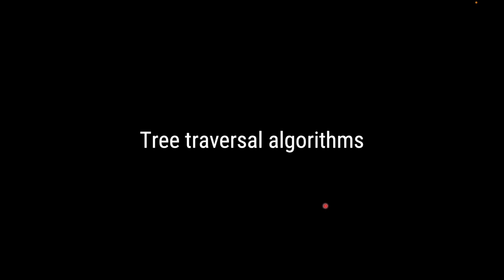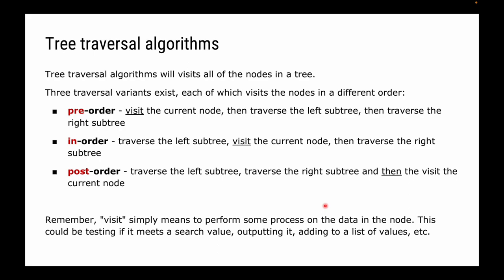We've talked about trees in their character, binary search trees, binary search algorithms applied to the tree, and tree implementations. The last thing we need to talk about is tree traversals. Remember, just as with graphs, searching isn't the same as traversing. Traversing means visiting every node in the tree. There are three different tree traversal variants, each visiting nodes in a different order: pre-order, in-order, and post-order.